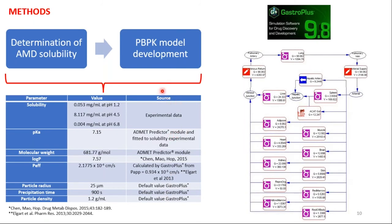We started with the determination of the solubility of the API. We used the Shake Flask method to determine the solubility of the drug in solution at pH 1.2, 4.5, and 6.8. We also used all the information predicted from the chemical structure using the ADMET predictor model in GastroPlus, and information from the literature and default values from the software. We used GastroPlus version 9.8.1 and used this information as input data for the PBPK model development.